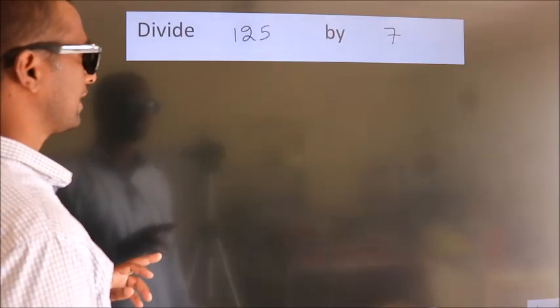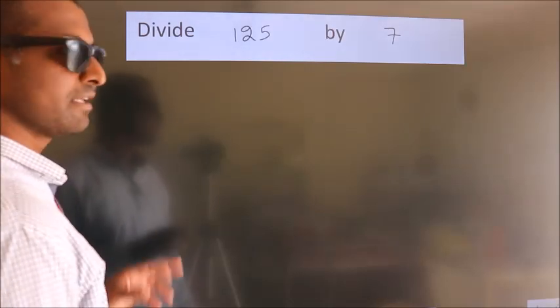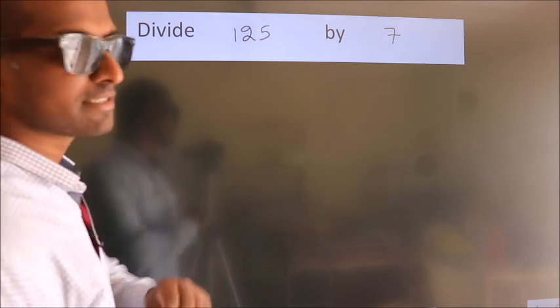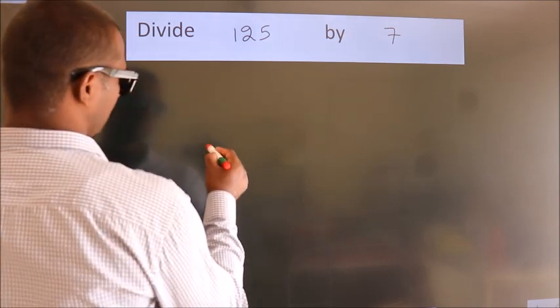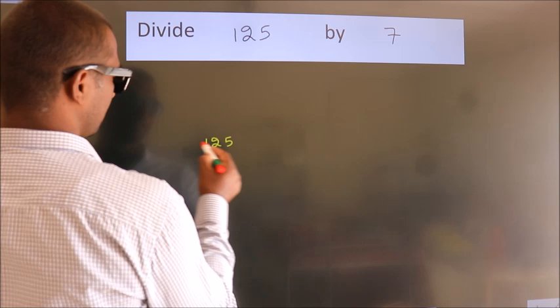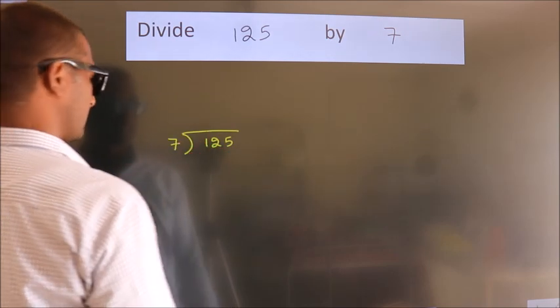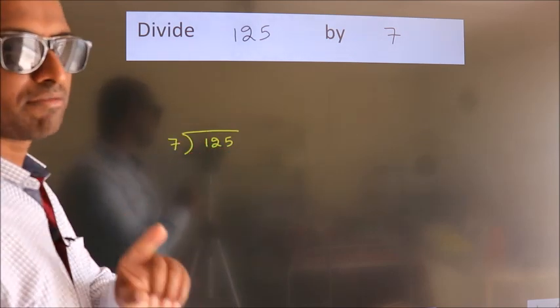Divide 125 by 7. To do this division, we should frame it in this way: 125 here, 7 here. This is your step 1.